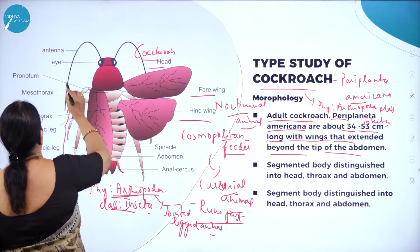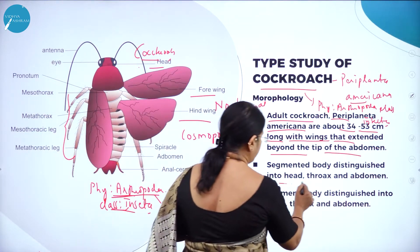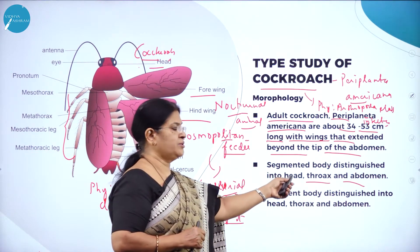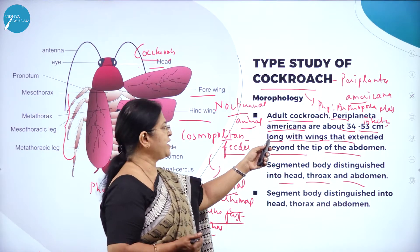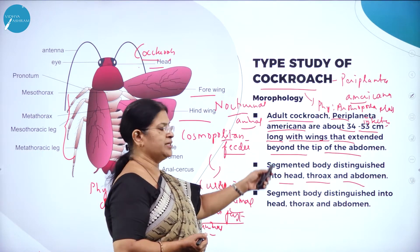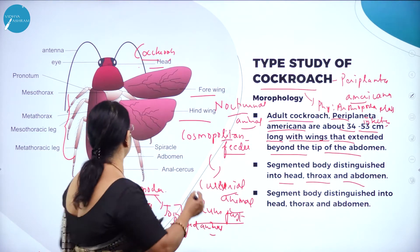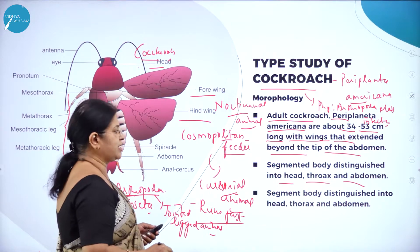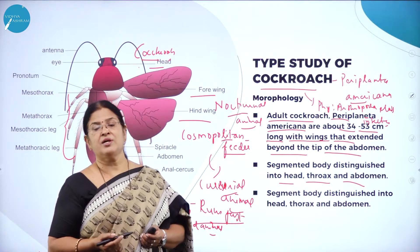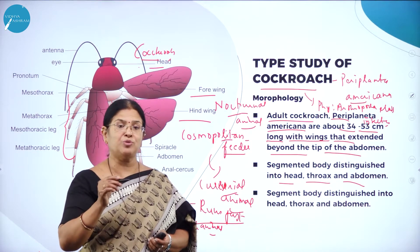Here you can see the thoracic region — the whole body is divided into head, thorax, and abdomen. Adult cockroach, Periplaneta americana, is about 34 to 53 millimeters long with wings extending beyond the tip of the abdomen. The body is segmented, and you can see the segments clearly. In previous years, dissection of cockroach was performed to study the digestive system and mouth parts.